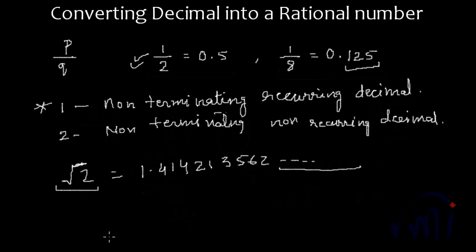Next we are going to learn how to convert a recurring non-terminating decimal number into a rational number. We will take some examples and learn by solving them. I am not going to give you any formula — just learn the method and you will find it easy enough to remember for a lifetime.